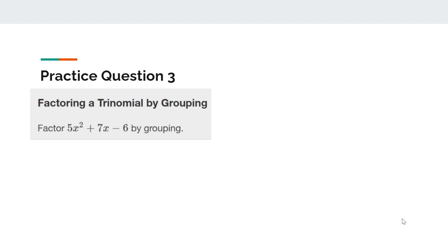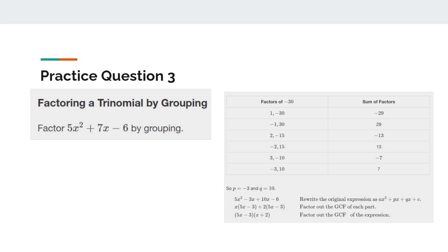Practice question 3: factoring the trinomial by grouping. Factor 5x squared plus 7x minus 6 by grouping. The answer is 5x minus 3 times x plus 2. A table is provided to show the process more clearly.